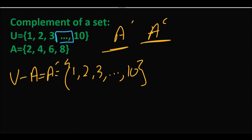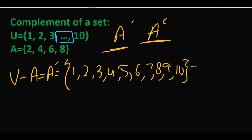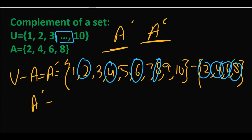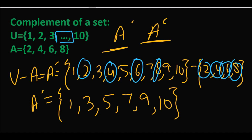یہاں تین dots (continuation) کا مطلب ہے کہ 3 کے بعد 4, 5, 6, 7, 8, 9 بھی موجود ہیں، یعنی 1 سے 10 تک۔ تو universal set مکمل لکھیں گے: {1, 2, 3, 4, 5, 6, 7, 8, 9, 10}۔ اس میں سے minus کریں گے set A جو ہے {2, 4, 6, 8}۔ Common elements 2, 4, 6, 8 نکال دیں، تو remaining یعنی A complement = {1, 3, 5, 7, 9, 10}۔